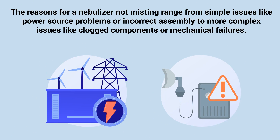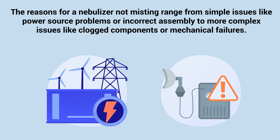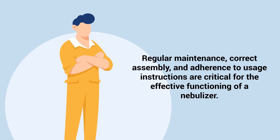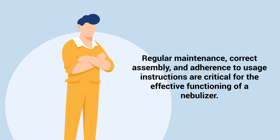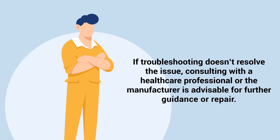The reasons for a nebulizer not misting range from simple issues like power source problems or incorrect assembly, to more complex issues like clogged components or mechanical failures. Regular maintenance, correct assembly, and adherence to usage instructions are critical for the effective functioning of a nebulizer. If troubleshooting doesn't resolve the issue, consulting with a healthcare professional or the manufacturer is advisable for further guidance or repair.